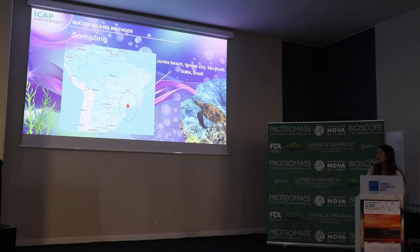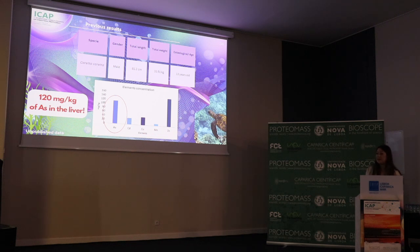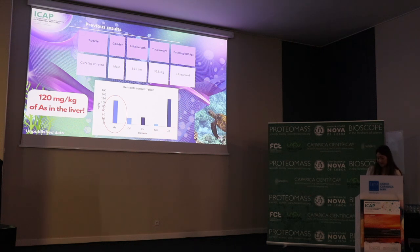This is the exact sample — we found this animal dead, but the carcass was in good condition, at Jureia Beach, Iguape City, São Paulo State, Brazil. Previous analysis found 120 ppm of arsenic in the liver — a very high amount. The organism probably tries to generate organoarsenics to eliminate this highly toxic arsenic.